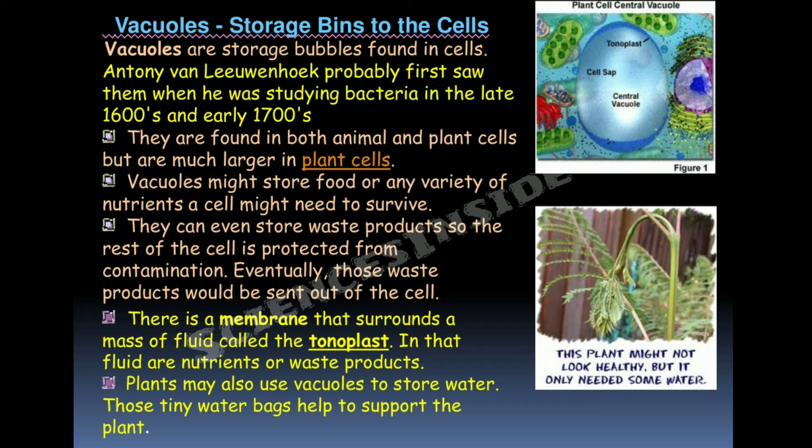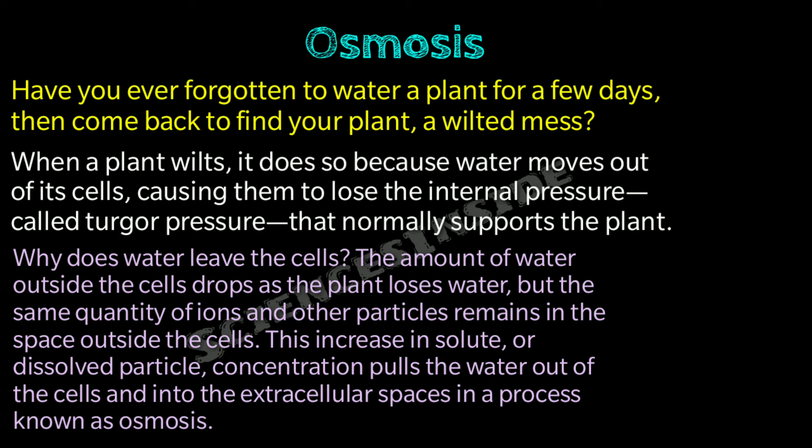Have you ever forgotten to water a plant for a few days and come back to find it wilted? When a plant wilts, water moves out of its cells, causing them to lose internal pressure called turgor pressure. The amount of water outside the cells drops but the same quantity of ions and other particles remains, increasing solute concentration outside. This pulls water out of the cells into the extracellular space in a process called osmosis.